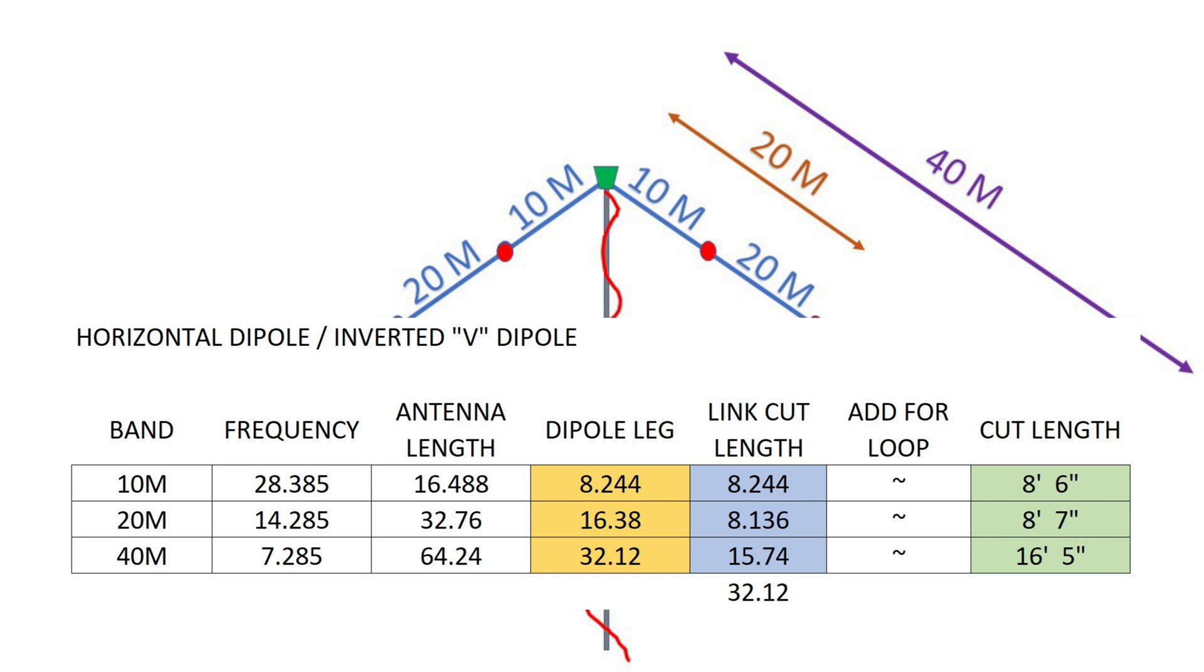If you go online and look at a dipole calculator, you're going to get a calculation for a horizontal dipole. We're orienting this as an inverted V. So the lengths may not be precisely the same. So I recommend that you cut your wire lengths a little bit long. For 10 meters, you want a length of 16.48 feet right here. This is the full antenna length. If you were going horizontal dipole, that means each leg would need to be about 8.24.